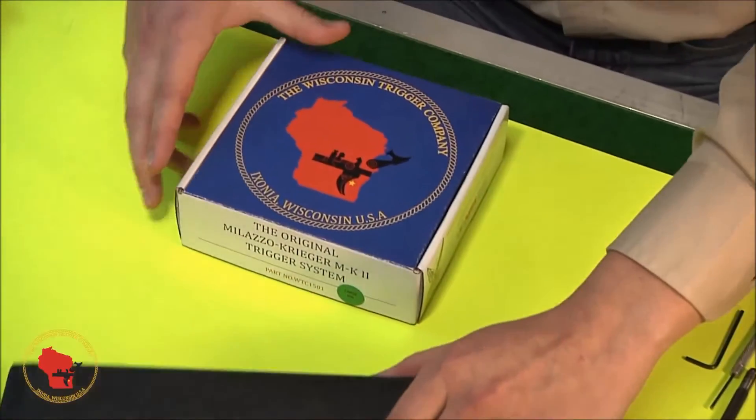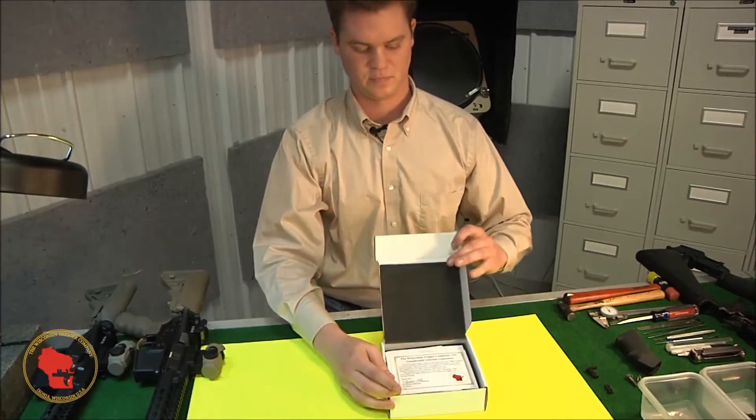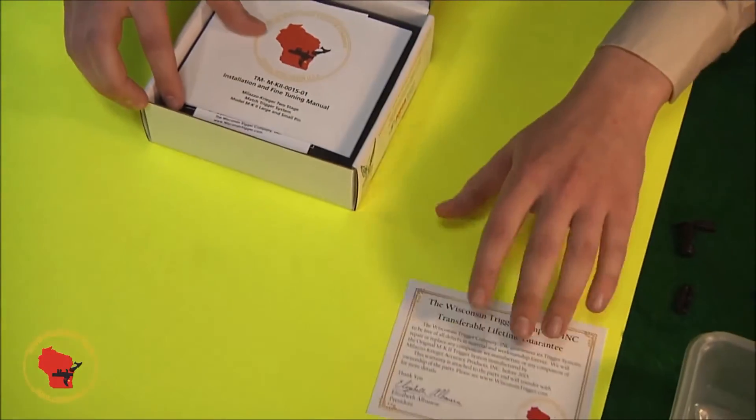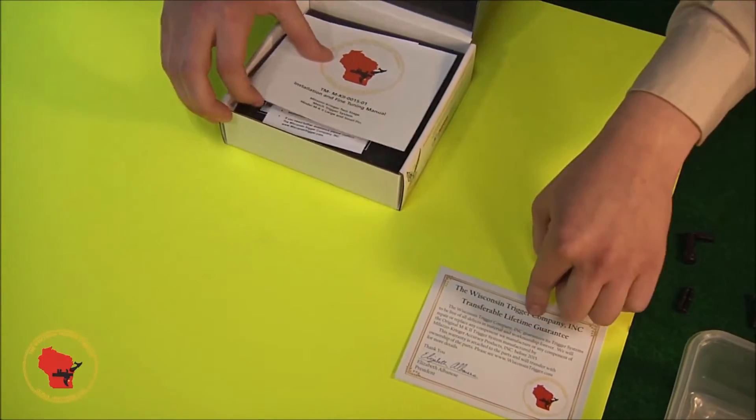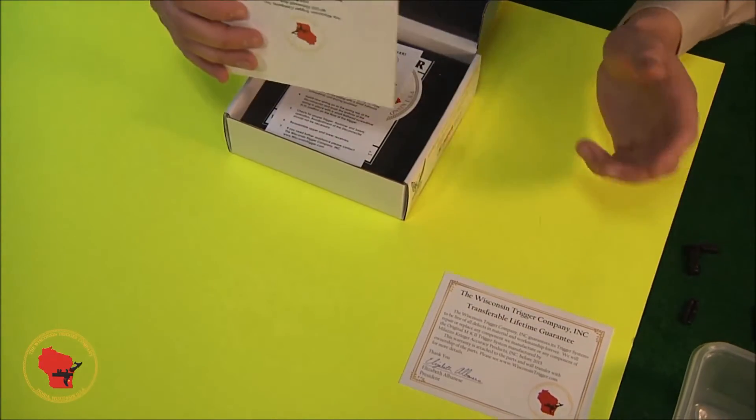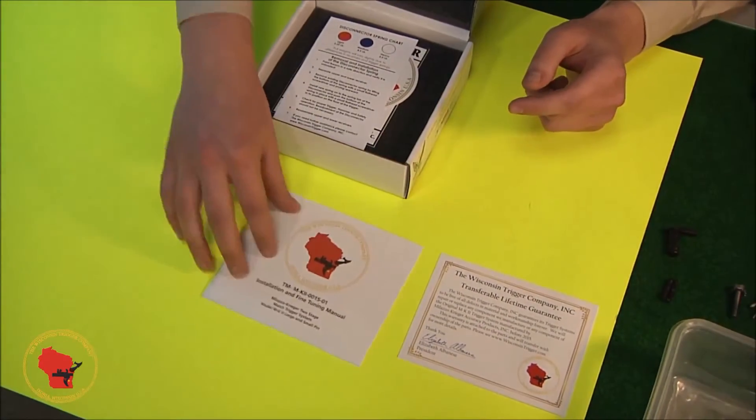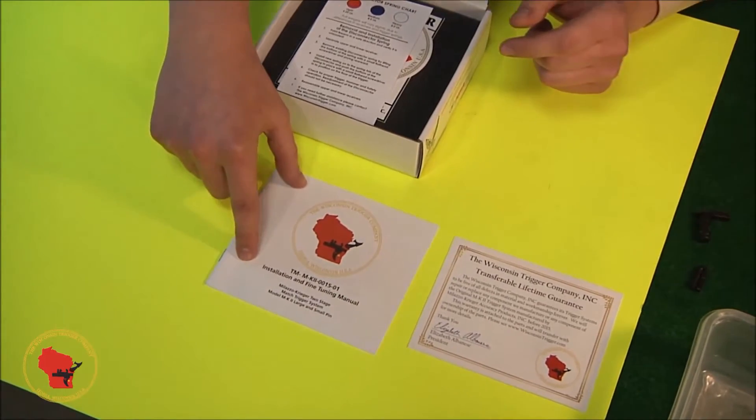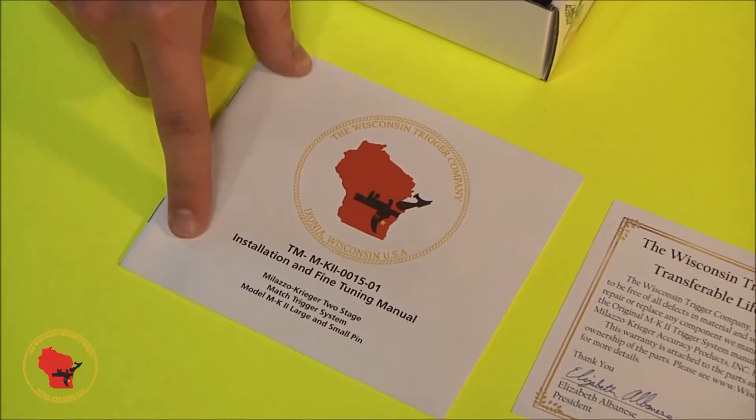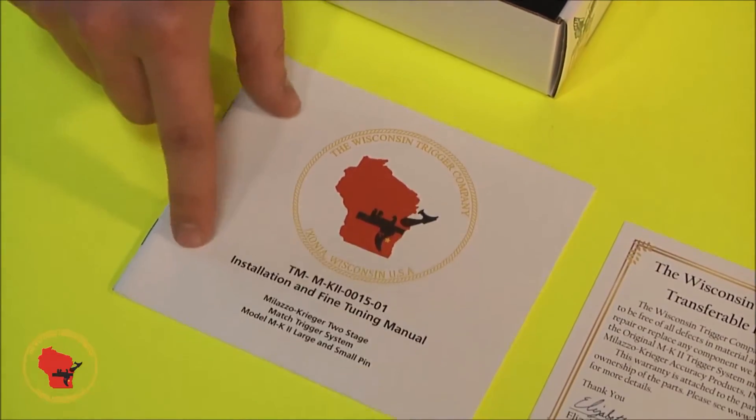We're gonna take a look at what you get in the MK2 box here. Up first, we have your guarantee card. Now we will cover any triggers we make, any triggers that have been previously made by Moazzo Krieger Accuracy Products Incorporated. After that, we have the installation and fine-tuning manual. This is very important, and if you haven't read through it yet, you probably should. A lot of useful information in there.